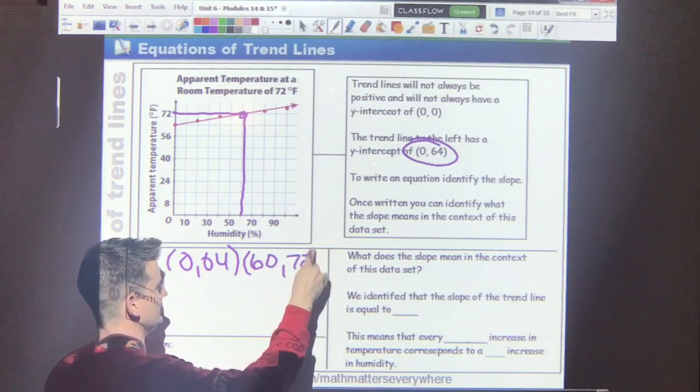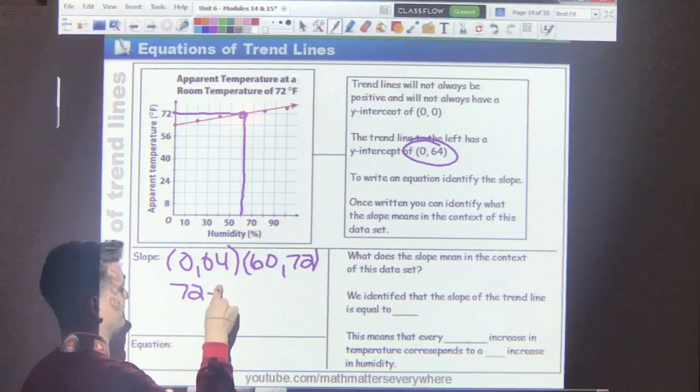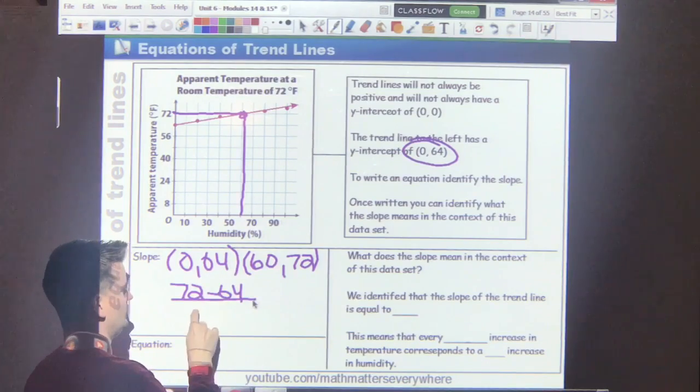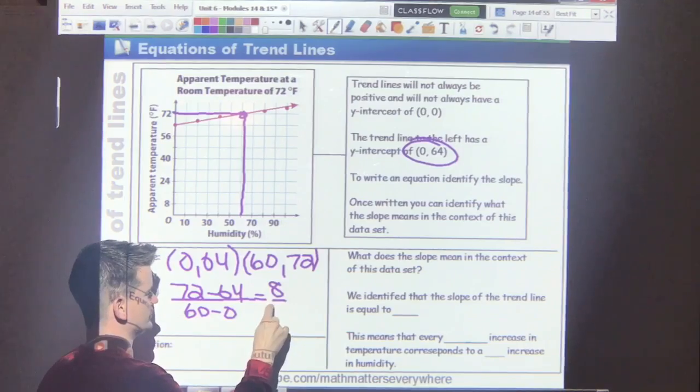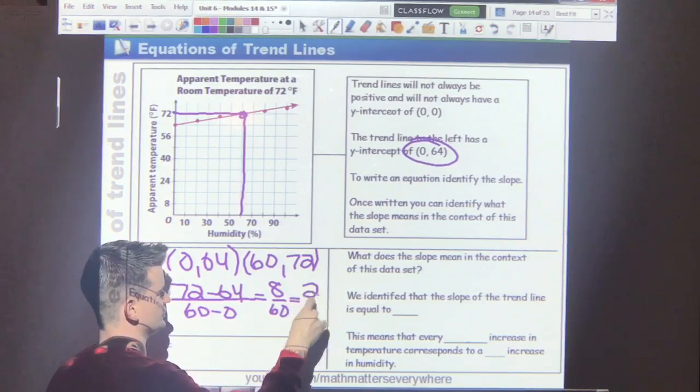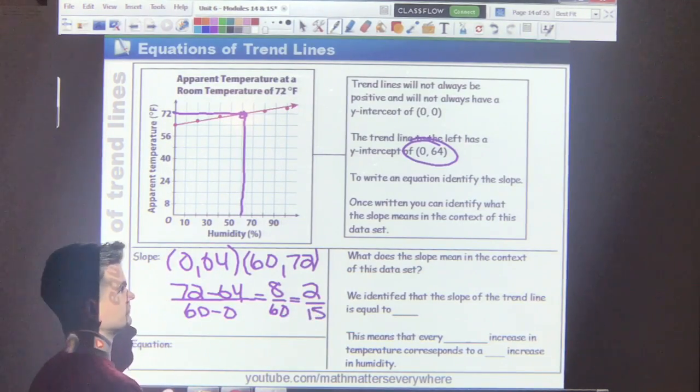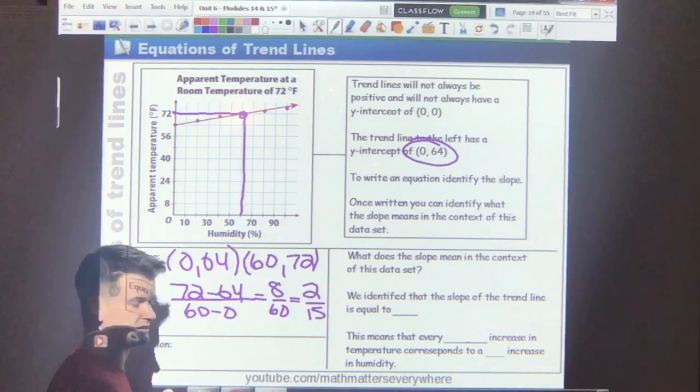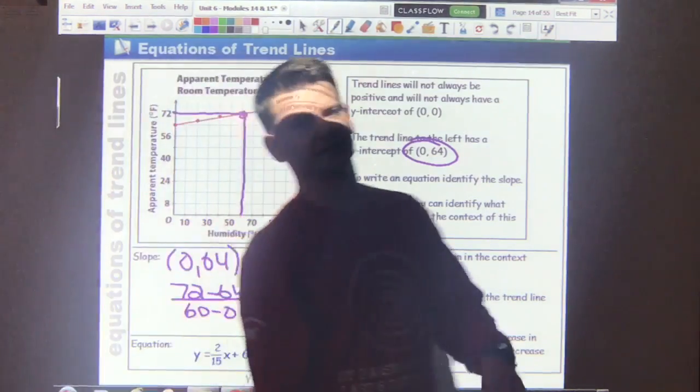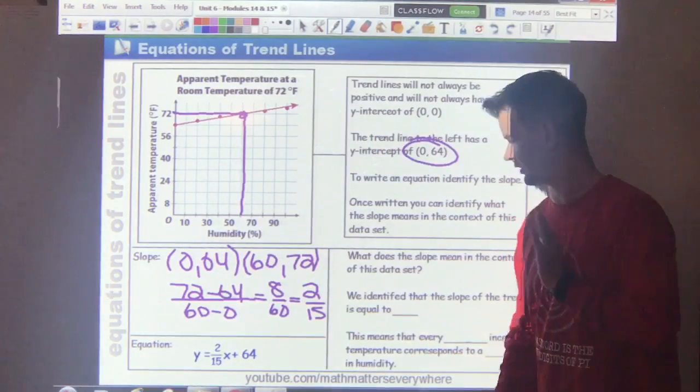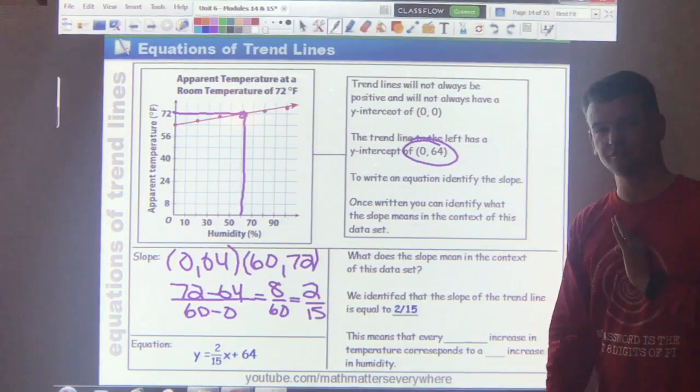Running this through the slope formula again, I'm going to get 72 minus 64 over 60 minus zero. That gives me 8 over 60, which simplifies down to 2 over 15. I know my y-intercept is 64, so I can write the equation as y equals 2 over 15x plus 64. We identify the slope as 2 fifteenths.